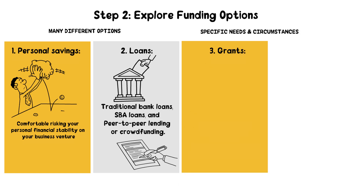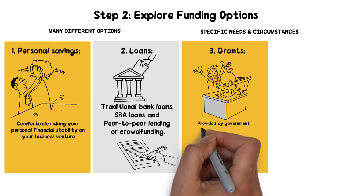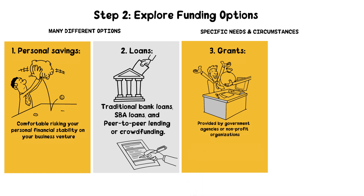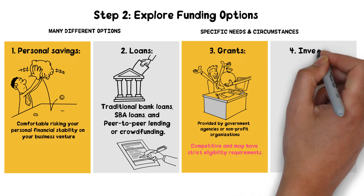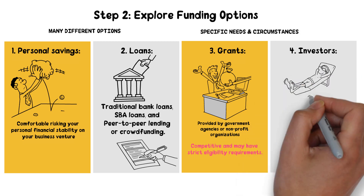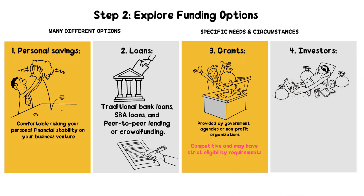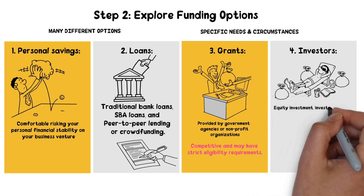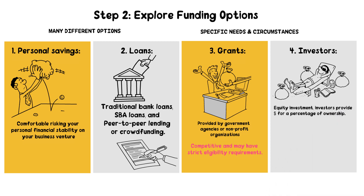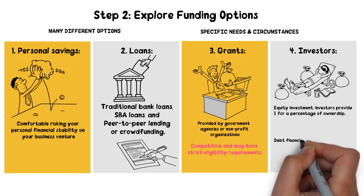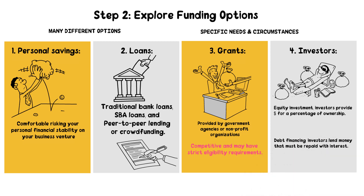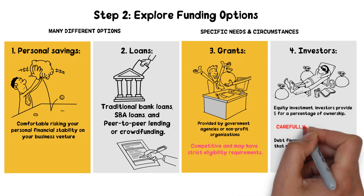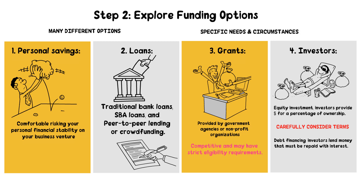Grants are a form of funding that does not need to be repaid. They are often provided by government agencies or non-profit organizations to support specific types of businesses or projects. While grants can be a great source of funding, they can be competitive and may have strict eligibility requirements. Another option is to seek funding from investors, either in the form of equity investment or debt financing. With equity investment, investors provide capital in exchange for a percentage of ownership in your business. With debt financing, investors lend you money that must be repaid with interest. Both options have pros and cons, and it's important to carefully consider the terms and conditions before entering into an agreement with an investor.